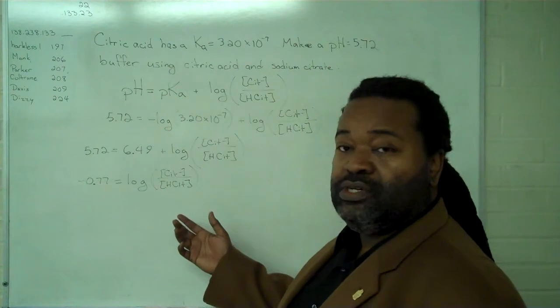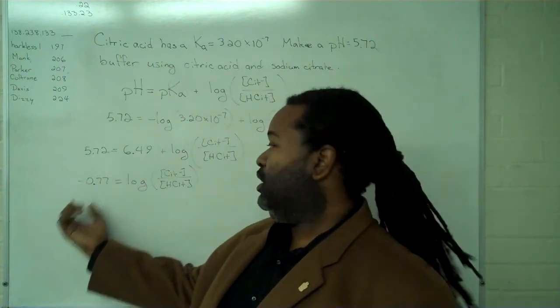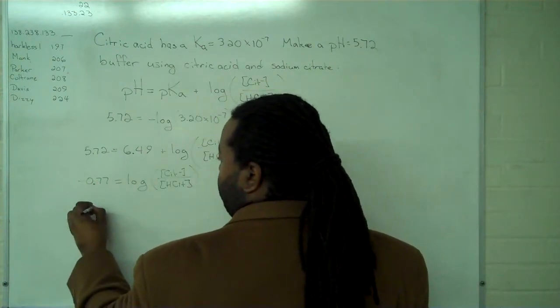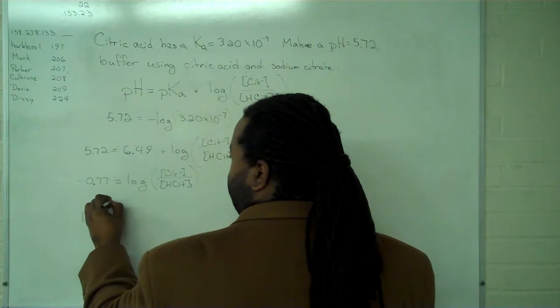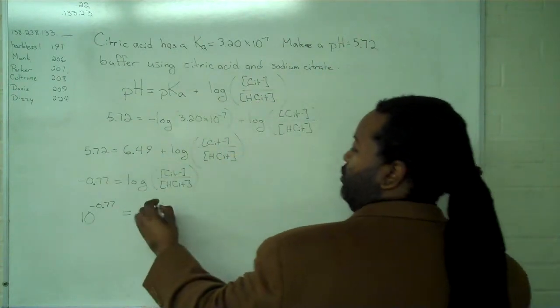Once we have this in place, we're going to use the base 10 and raise that to each of these. We'll have a number for 10 raised to the negative 0.77. 10 to the log of anything is just the argument itself.